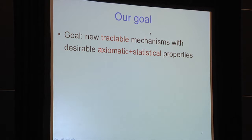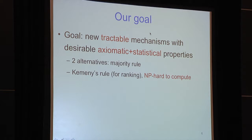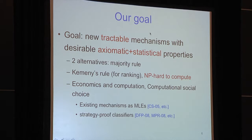Why aren't we happy with previous approaches? Social choice dates back to 400 BC. When you have only two alternatives, the majority rule is clearly the best — great axiomatic properties, easy to compute, great statistical properties. But with more than two alternatives, the problem is much trickier. People believe the Kemeny rule, which is the MLE of Mallow's model, is a great choice, but it's hard to compute. There's also case-by-case work in computational social choice evaluating existing rules and studying strategy-proof classifiers.